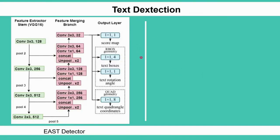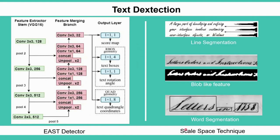For text detection, I compared EAST detector and the scale space technique. EAST is a deep learning technique with two main stages: first, a fully convolutional network that outputs the probability and location of text; and second, non-max suppression to combine bounding boxes into one final text box. The scale space technique is an image processing technique with three main steps: line segmentation, blob-like feature extraction using Gaussian filter and blurring, and finally using width-height ratio or area criteria to segment the text.